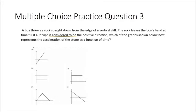This next question is a little tricky. A boy throws a rock straight down from the edge of a vertical cliff, and if up is considered the positive direction, which graph best represents the acceleration of the stone as a function of time? Once the object leaves the boy's hand, the only acceleration is due to gravity — always negative 9.81 meters per second squared. It doesn't change, so the acceleration-time graph should be a constant horizontal line at negative 9.81. The only graph showing that is B.